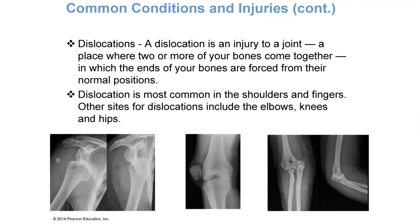Now we're getting to dislocations. As an X-ray technician, I like to see how the body responds to and recovers from injuries. A dislocation is an injury to a joint where the ends of your bones are forced from their normal positions. The most common places are shoulders and fingers. Other sites include elbows, knees, and hips. The radiographs shown include a shoulder dislocation, a patella dislocation, and an elbow dislocation.